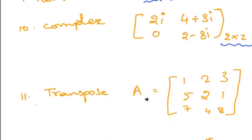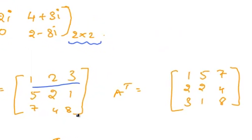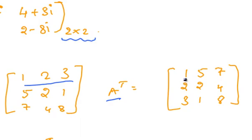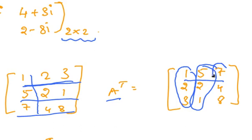Transpose of a matrix — the rearrangement of rows as columns is known as the transpose of a matrix. For example, if A equals the 3 by 3 matrix with rows [1, 2, 3], [5, 2, 1], [7, 4, 8], then the transpose of A is obtained by writing the columns as rows — that is, interchanging rows with columns. The first row becomes the first column, the second row becomes the second column, and the third row becomes the third column. This is the transpose of a matrix, represented by the symbol Aᵀ, also read as A transpose.